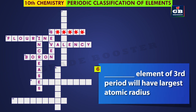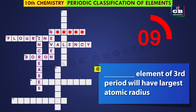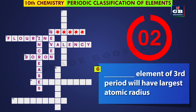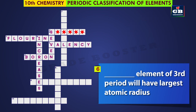Six across: dash element of the third period will have the largest atomic radius. What is that element? Sodium. Sodium element of the third period will have the largest atomic radius.